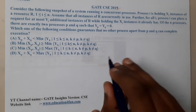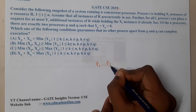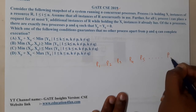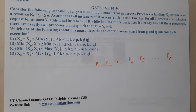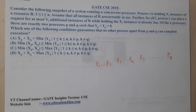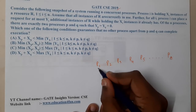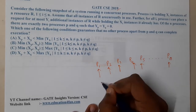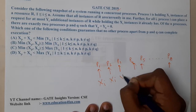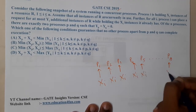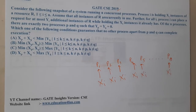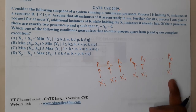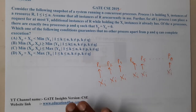So we have processes p1, p2, p3, p4, p5, up to pn. Each of these processes is holding some instances of resource R — since they are holding resources, the arrows point towards themselves. Let us denote the held amount as x_i. Assume that all instances of R are currently in use — so if there are, say, n instances of R, all are being used.